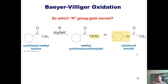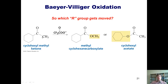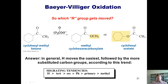When using a Baeyer-Villiger oxidation with an asymmetrical ketone, the question is where the oxygen goes. In general, a hydrogen atom always migrates most easily — so for an aldehyde, the oxygen always goes in between the hydrogen and the carbonyl carbon. For a ketone, the oxygen ends up going between the carbonyl carbon and the more substituted carbon group, according to a substitution-based migratory aptitude trend. This trend is hard to follow without deep knowledge of the mechanism, so if your curiosity persists, ask during or outside of class.